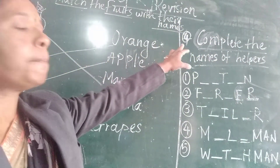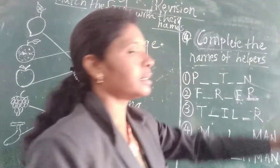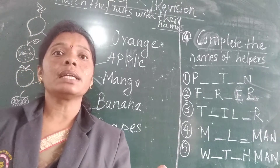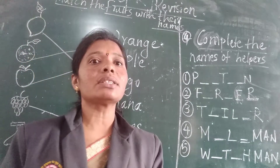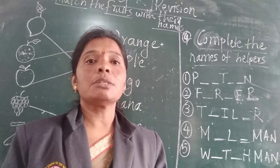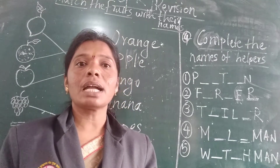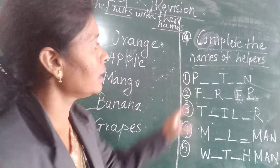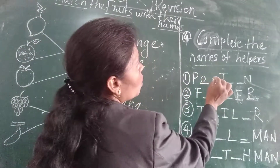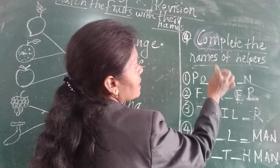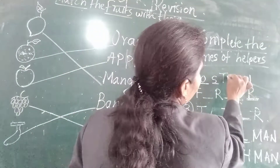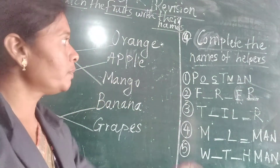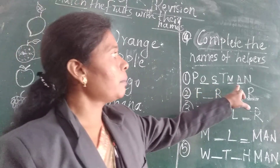Now the fourth question: Complete the names of helpers. First, you have to fill in: P-O-S-T — post, M-A-N — man. Postman. P-O-S-T-M-A-N postman.